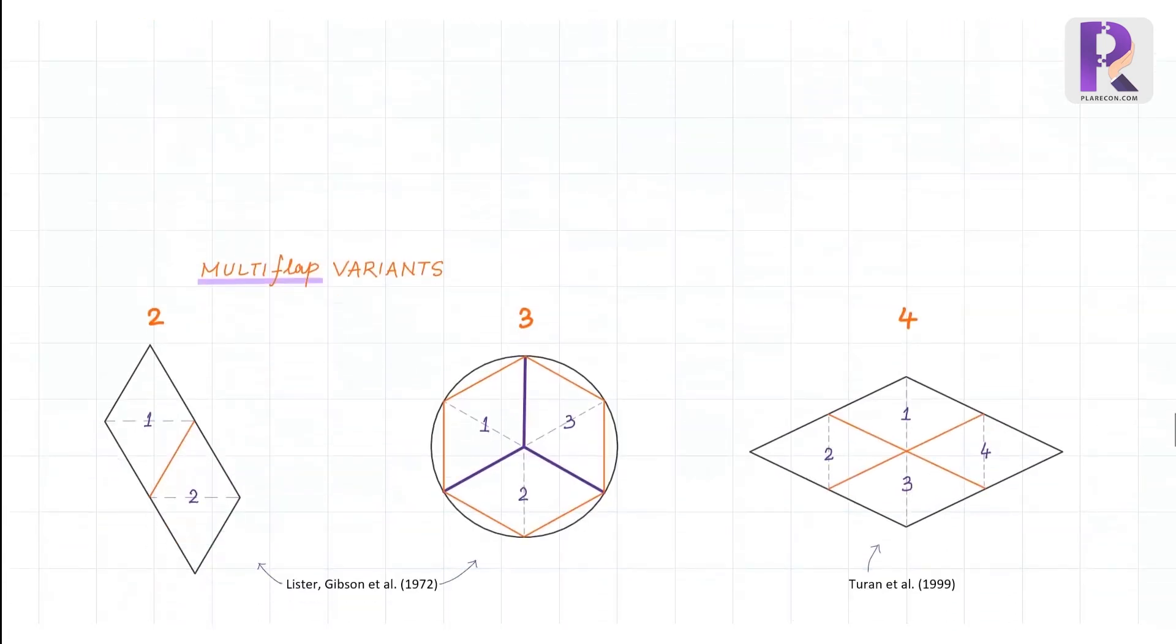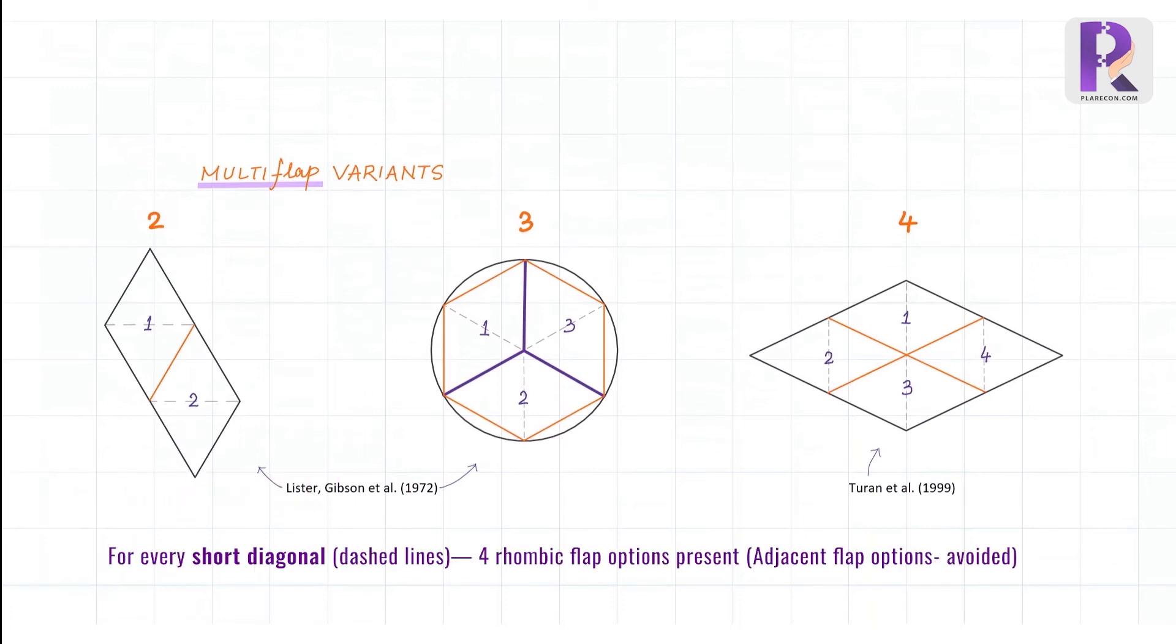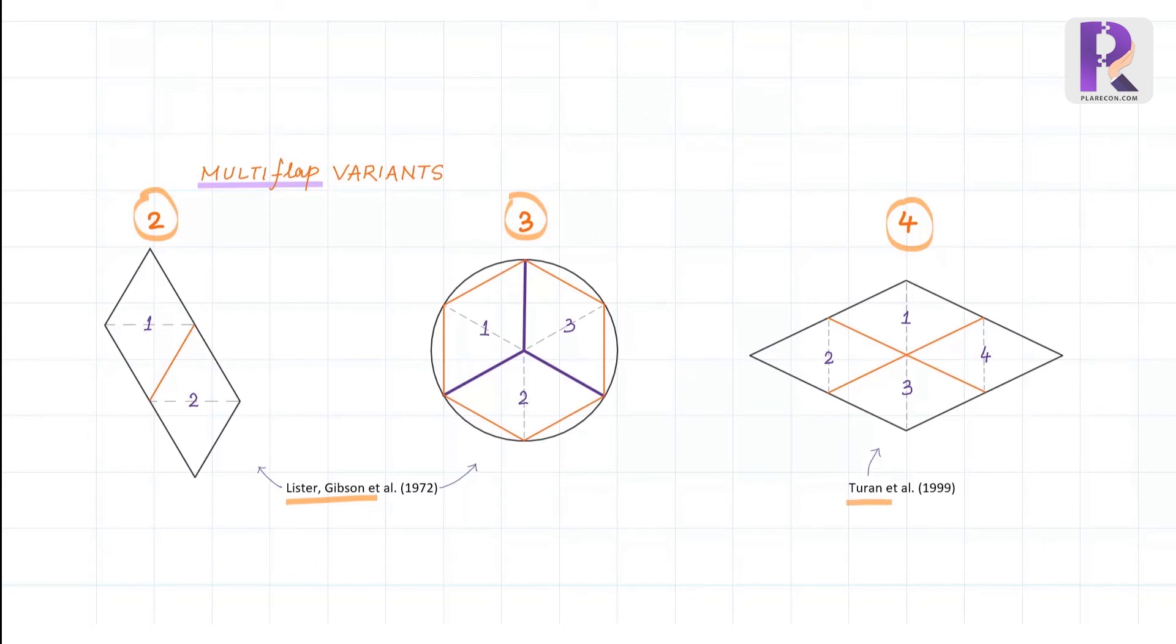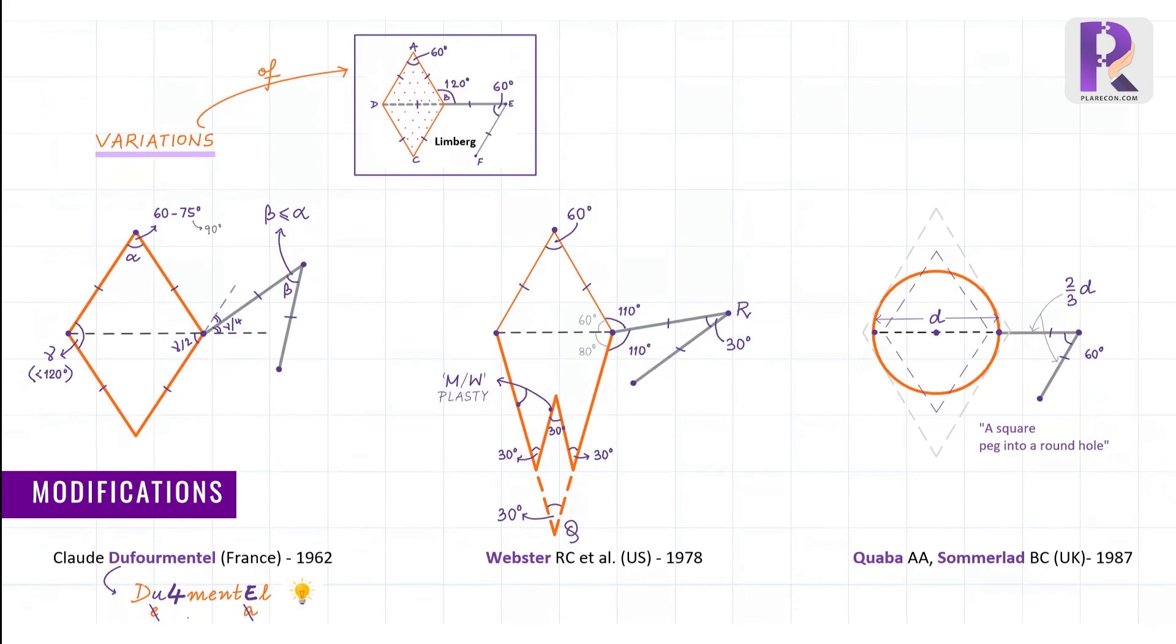Let's quickly see some of the variations in the Limburg flap design. To achieve primary donor site closure in larger defects using Limburg's flap, two flap variants for rhomboid-shaped defects and three flap variants for large circular defects were described by Lister and Gibson, while for a large rhombic defect, Dufourmentel described a four-flap variant. Now, let's check out some of the more popular variations or modifications.